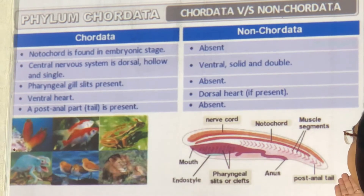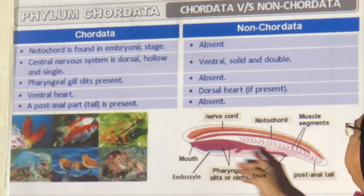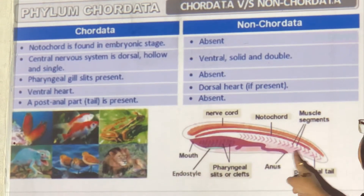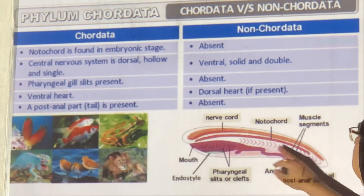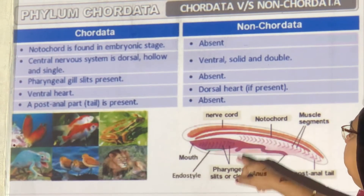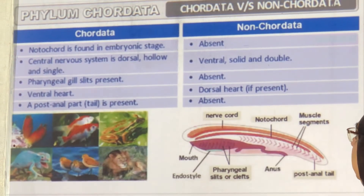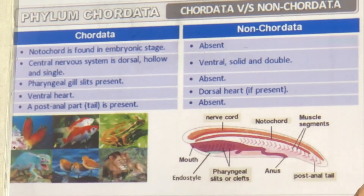Have a look at a schematic diagram. This shows the mouth, anus, and tail after the anus. Notochord is there, nerve chord is there, and pharyngeal gill slits are present.